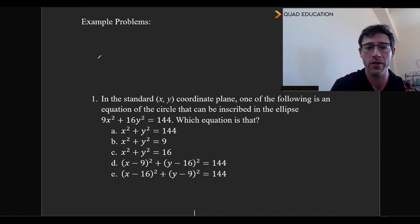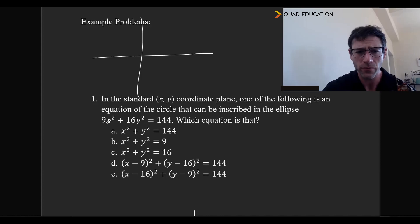As usual, one of the best ways to solve this is going to be to make a drawing. And we have this 9x² + 16y² = 144, which is in sort of an unfamiliar format for an ellipse. So what we're going to do is go ahead and divide that by 144 to get r equals 1 on the right side.